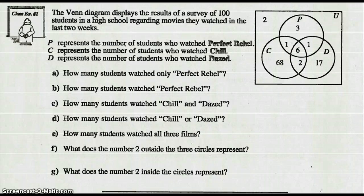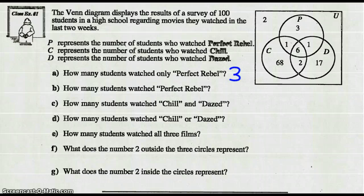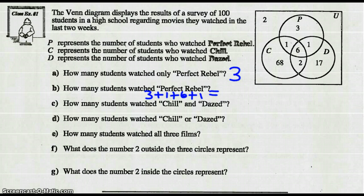The number of students who watched Perfect Rebel — the key here is we want ALL students who watched Perfect Rebel, not just those who watched it only. So that would be 3 plus 1 plus 6 plus 1, which equals 11.